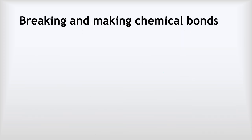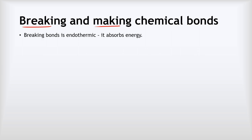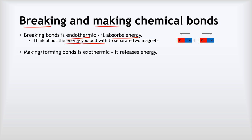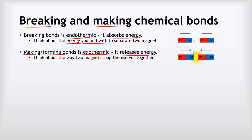In order to explain why some reactions are exothermic and others are endothermic, we need to think about what happens when you break and when you make chemical bonds. Breaking chemical bonds is endothermic — it absorbs energy. To understand that, think about what happens when you separate two magnets. If two magnets are stuck together, you have to pull them apart and that requires energy. It absorbs energy to separate two magnets, in much the same way as it absorbs energy to separate two atoms that are bonded together. On the other hand, making or forming chemical bonds is exothermic — it releases energy. Think about our magnets analogy: two magnets snap themselves together and make a little audible click — that is them releasing energy as they attract towards each other. It's the same with two atoms when they're attracted to each other to form a bond.